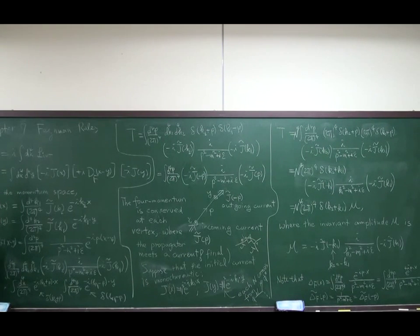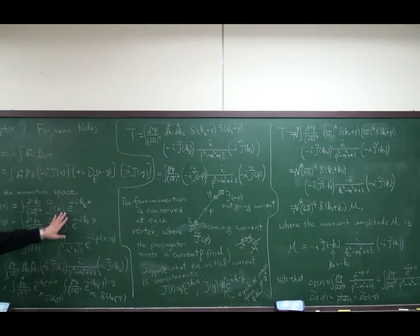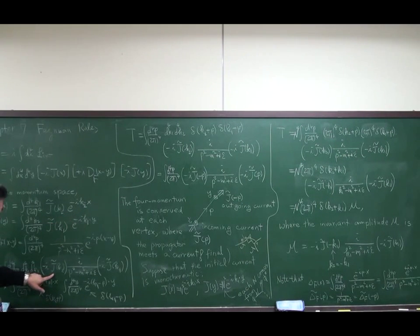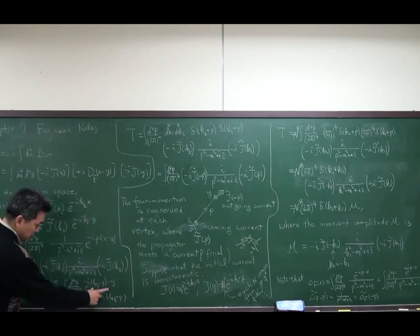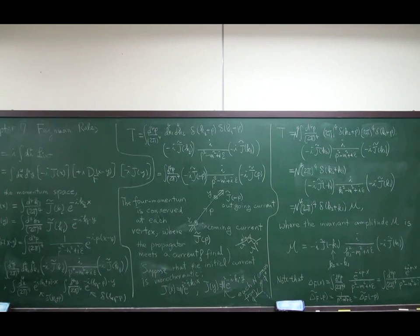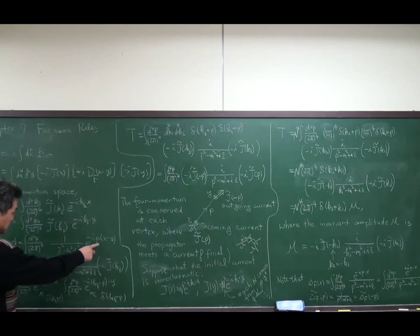So if I substitute these three factors into this integral, I can carry out the x and y integrals because the other part is independent of x and y. We have a momentum integral and the k1 and k2 integrals. This factor comes in, and all of the exponential factors are pulled out and separated into two pieces which have x dependence and y dependence separately. Because it is x minus y, one factor has the same sign and the other has a different sign.